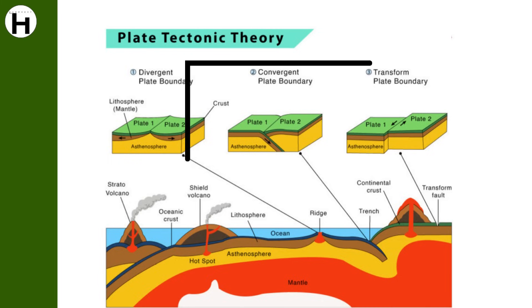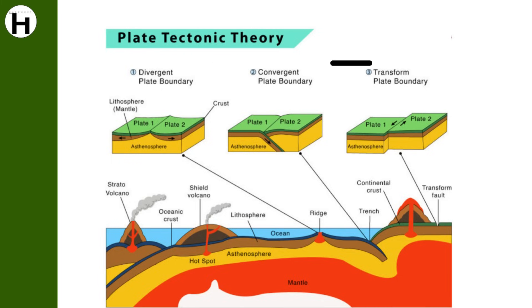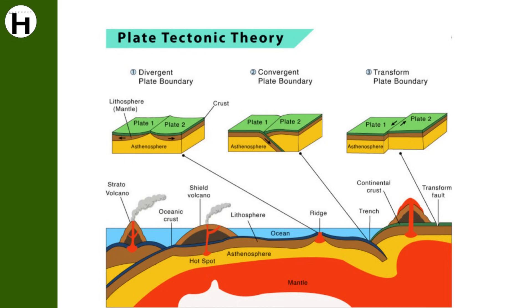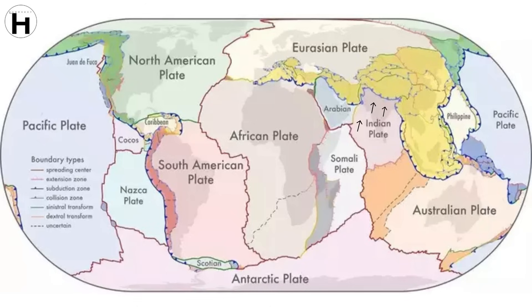Continent-continent convergence is formed between two continental plates. When the plates converge, oceanic sediments are squeezed and upthrust between the plates, and these squeezed sediments appear as fold mountains along the plate margins. The Indo-Australian tectonic plate has been pushing northward into the Eurasian plate, resulting in the Himalayan range rising about 1 cm every year and expanding southward.